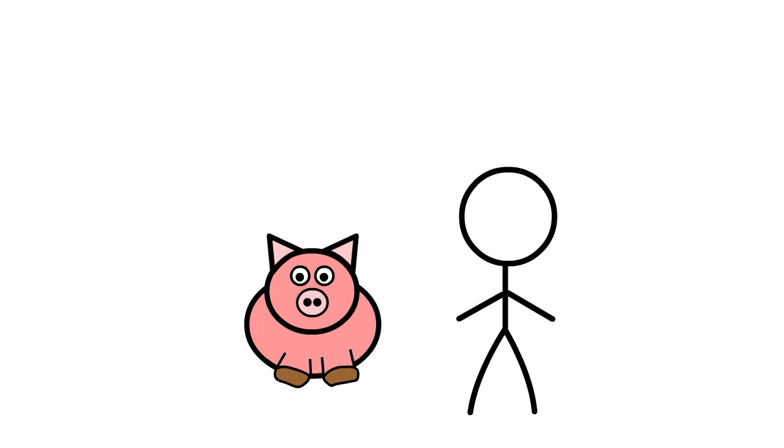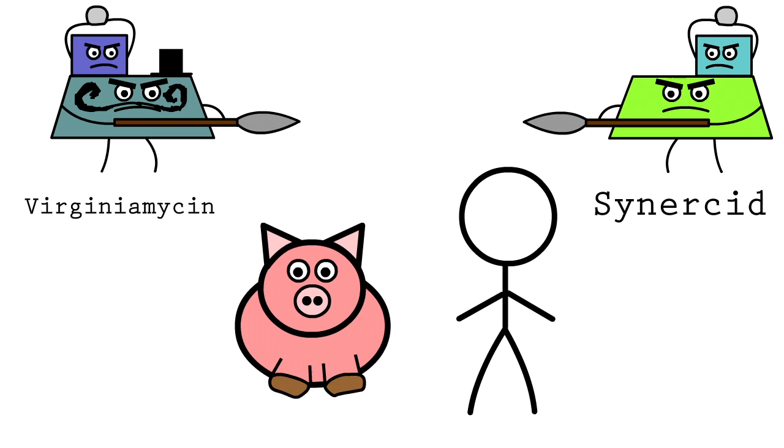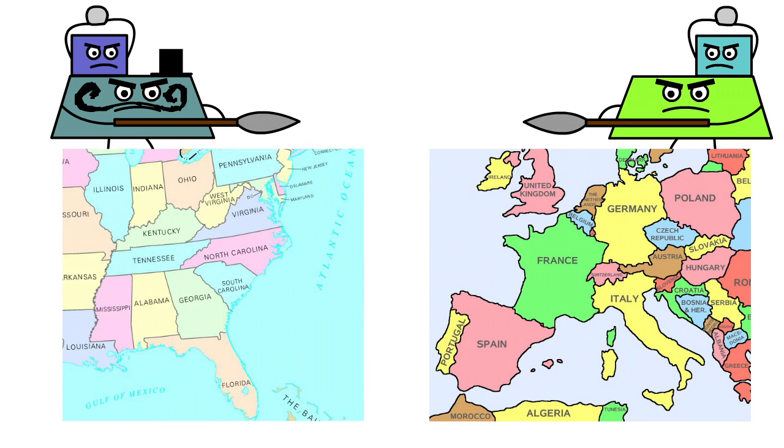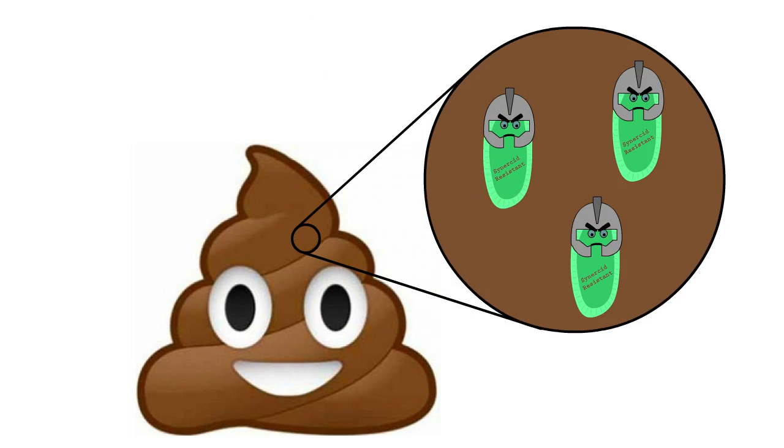The dangers of using antibiotics in livestock is exemplified by a drug known as Sinercid. The drug was approved for use in humans in 1999, but a close relative known as virginiomycin had been used for years to plump up animals. Before Sinercid reached the market, studies in Michigan, Wisconsin, Maryland, Germany, and Denmark, to name just a few, all found in animal feces bacterial colonies that were resistant to Sinercid.